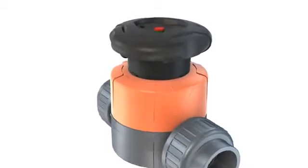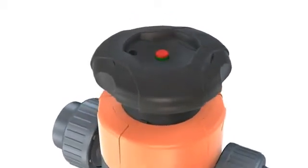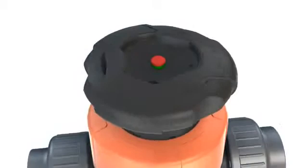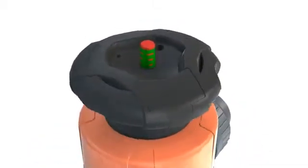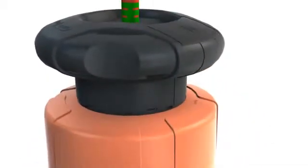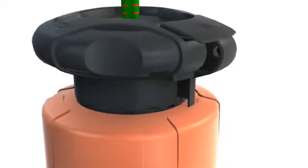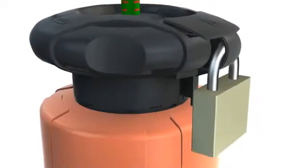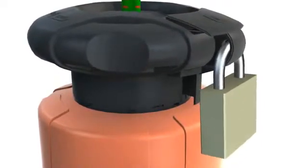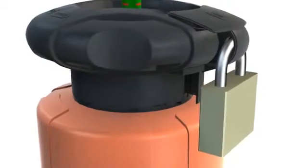If the valve is one quarter, half or three quarters open, the dual-coloured position indicator will show the actual position at a glance. A standard integrated locking system prevents unwanted manipulation. The position is clearly visible.